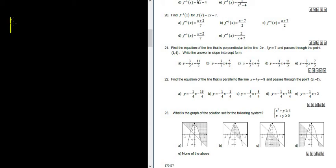Let's do problem number 21. Find the equation of the line that is perpendicular to the line 2x minus 3y equals 7.